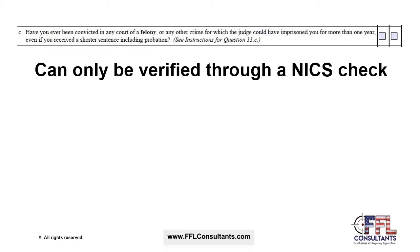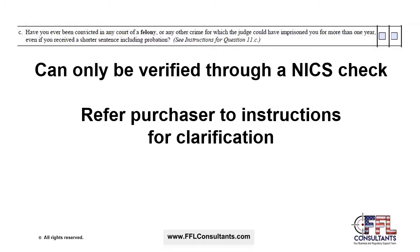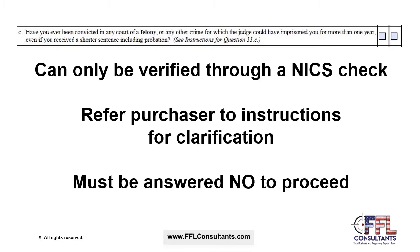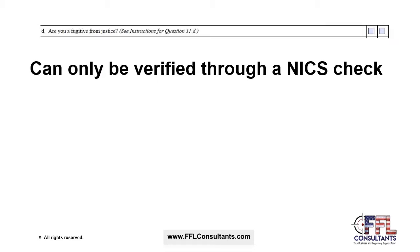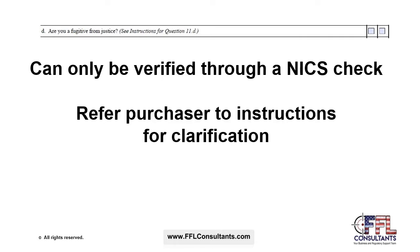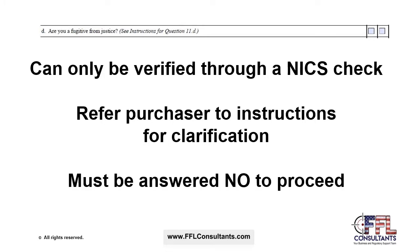Question 11C asks if the purchaser has ever been convicted in any court of a felony. This can only be verified through a thorough NICS background check by the FBI or state agency. Refer the purchaser to the instructions for clarification, and this question must be answered no to proceed. Question 11D asks if the purchaser is a fugitive from justice — again, verified only through a NICS check — and must be answered no to proceed with the firearms transfer.